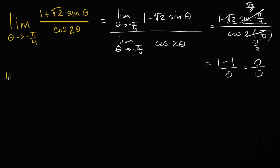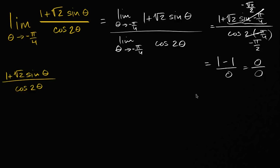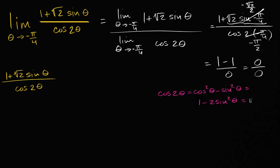So if I have one plus the square root of two sine theta over cosine two theta, the things that might be useful here are our trig identities — and in particular, cosine of two theta seems interesting. We know that cosine of two theta equals cosine squared theta minus sine squared theta, which equals one minus two sine squared theta, which equals two cosine squared theta minus one. You can move between these using the Pythagorean identity.